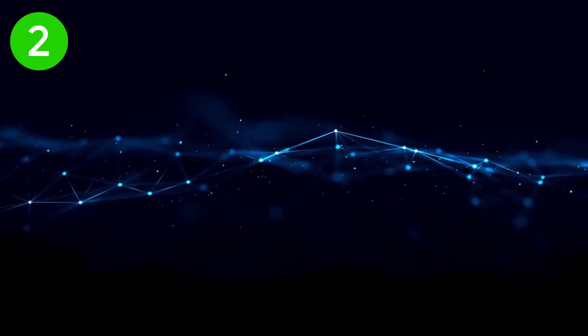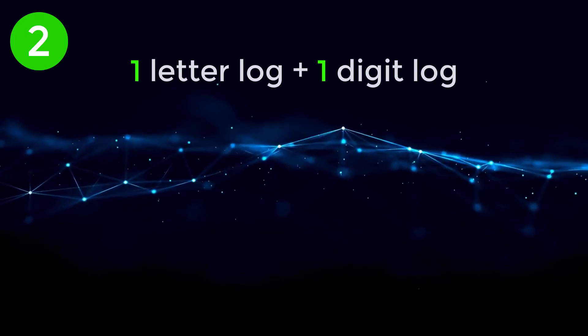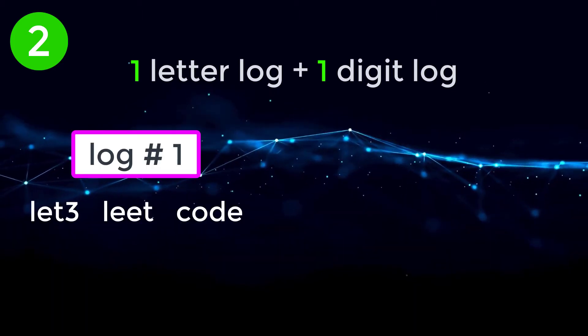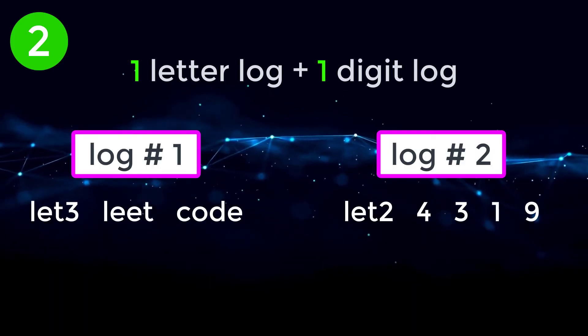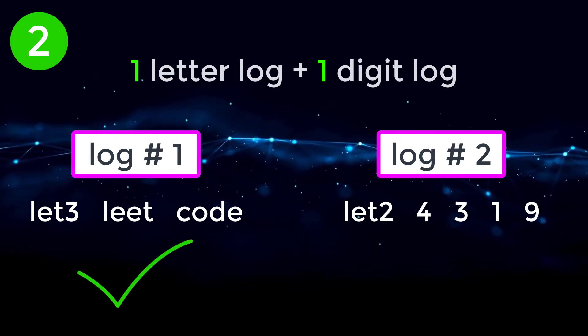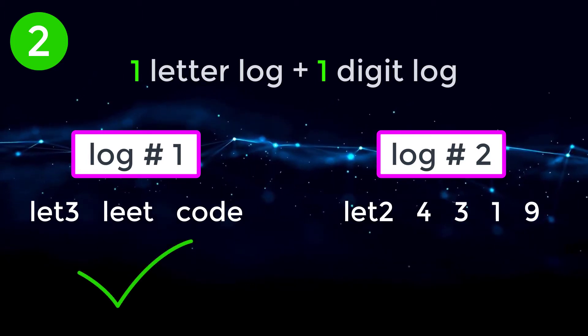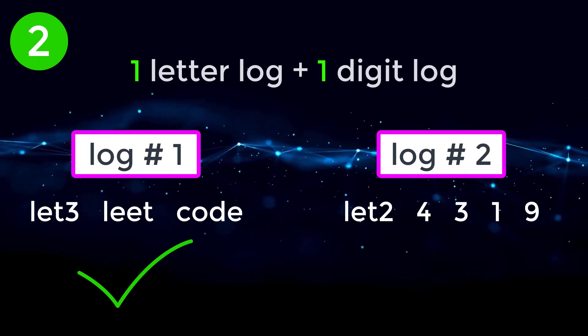In the second case, we would have one letter log and one digit log. So let's say we have log one and log two. In this example, log one must come before log two, since it is a letter log and letter logs always come before digit logs.